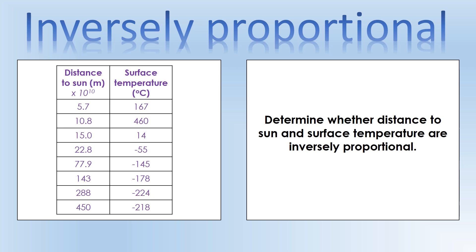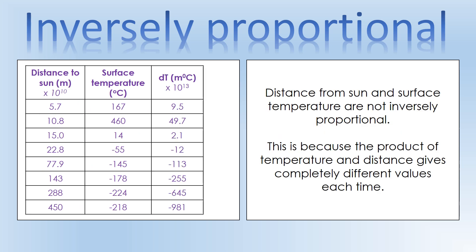It's important that you try it on your own before I take you through it. Let's add an additional column to the table: distance times temperature - that's why it's labelled dT - measured in metres degrees Celsius. The times 10 to the 13 is placed at the top so I don't have to write it out repeatedly. You can see that distance to the Sun and surface temperature are not inversely proportional, because the product gives completely different values every time - sometimes negative, sometimes positive, with the magnitude varying a lot. That's definitive evidence that those two things are not inversely proportional, even though people often say they are.